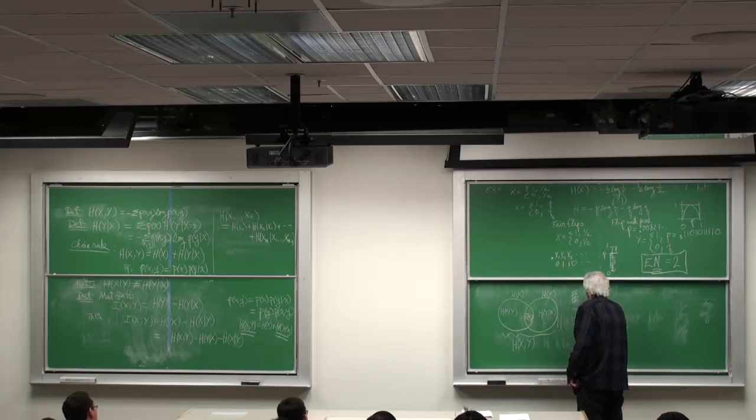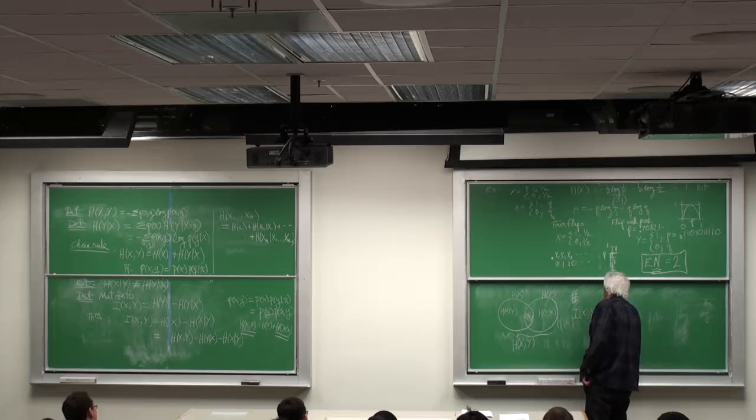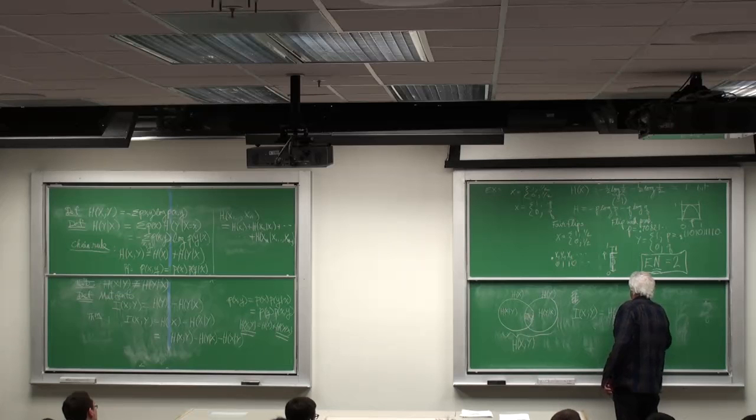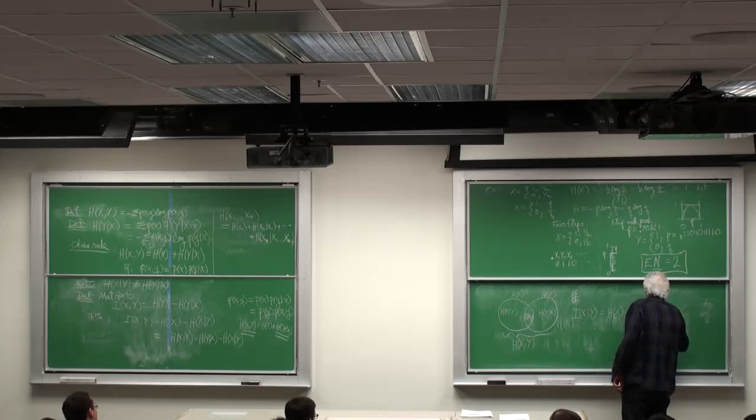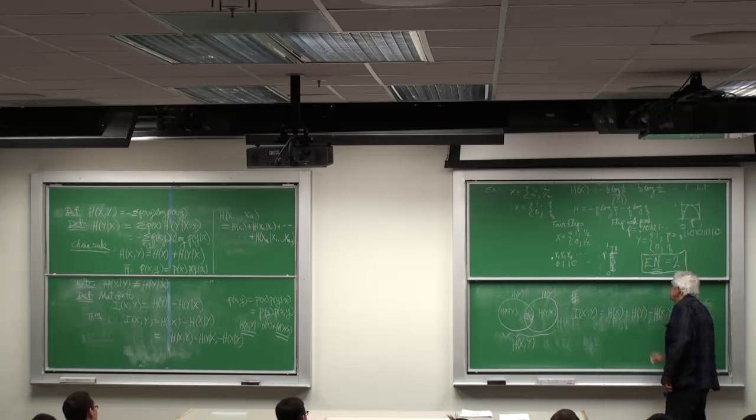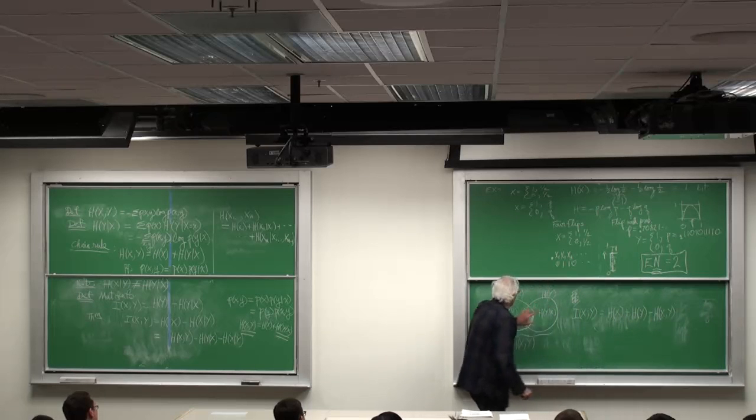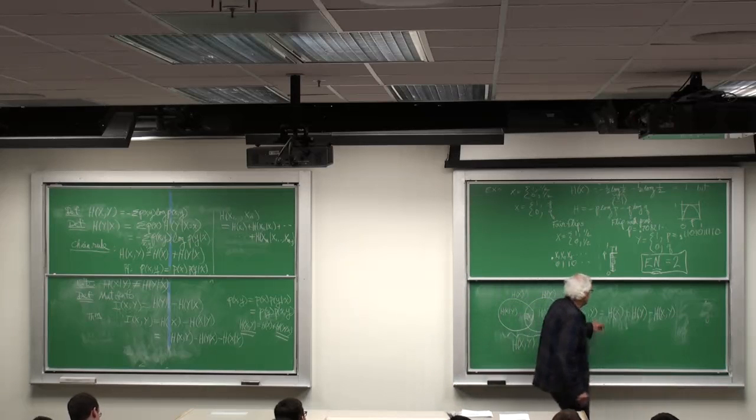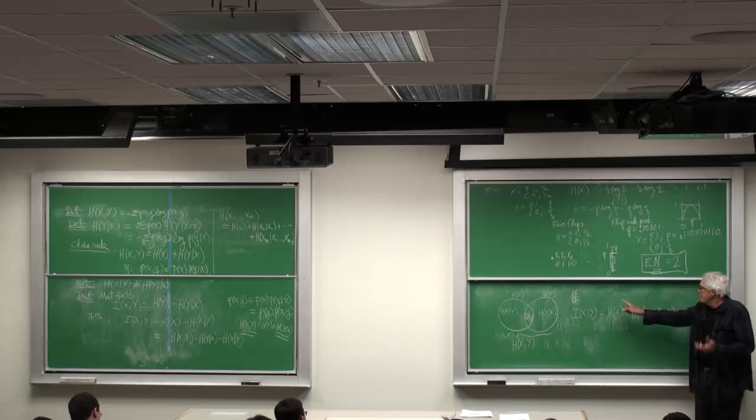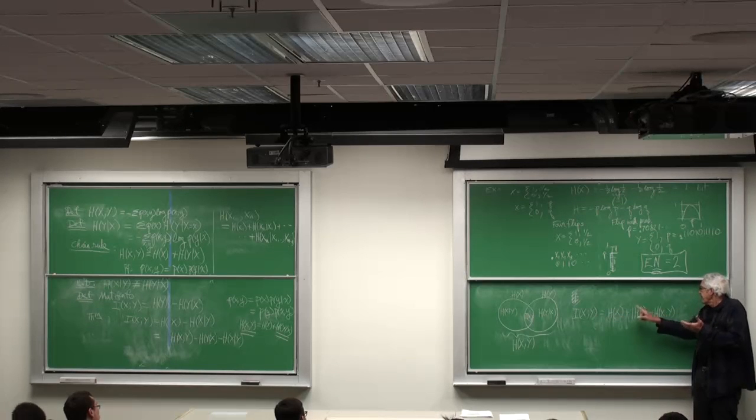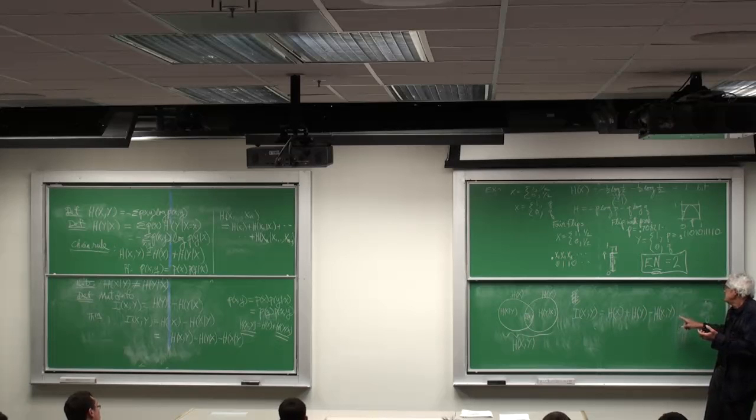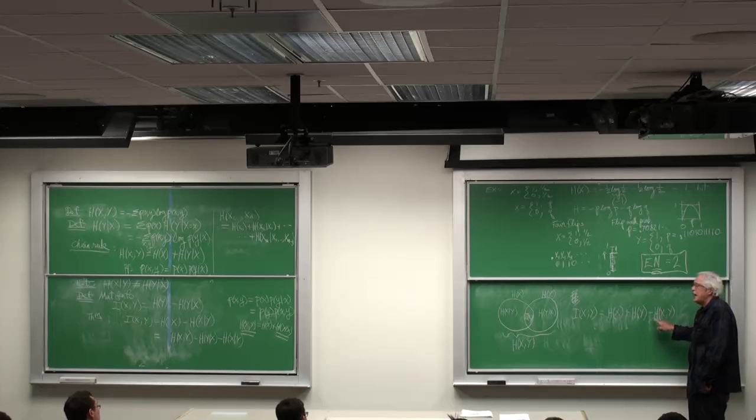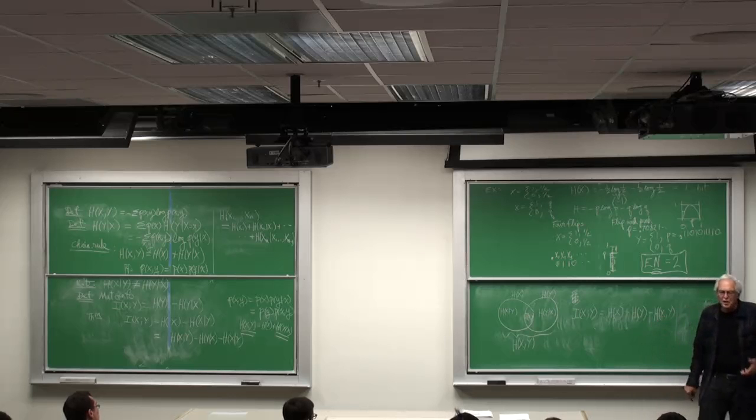I of XY, just by inspection of that diagram, is equal to H of X plus H of Y minus H of X comma Y. See, I've counted twice here, so I subtract it. The mutual information between X and Y is the deficit between the sum of the entropies and the entropy of the union or the sum.